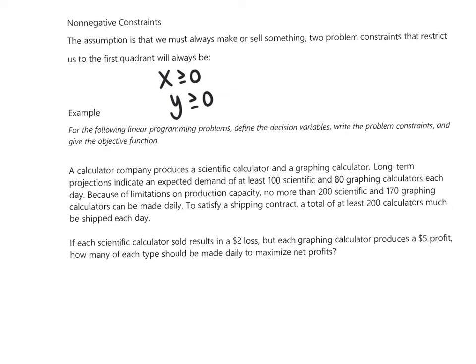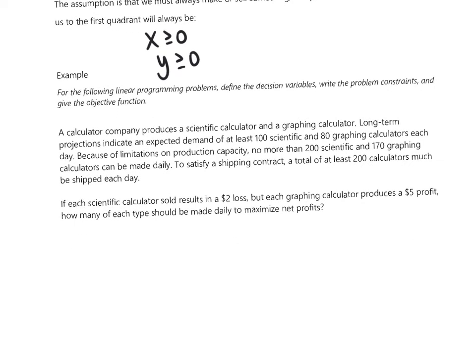Let's go through an example. A calculator company produces scientific calculators and graphing calculators. Long-term projections indicate an expected demand of at least 100 scientific and 80 graphing calculators each day. Because of limitations on production capacity, no more than 200 scientific and 170 graphing calculators can be made daily. We identify the variables: X equals the scientific calculator, and Y equals the graphing calculator.